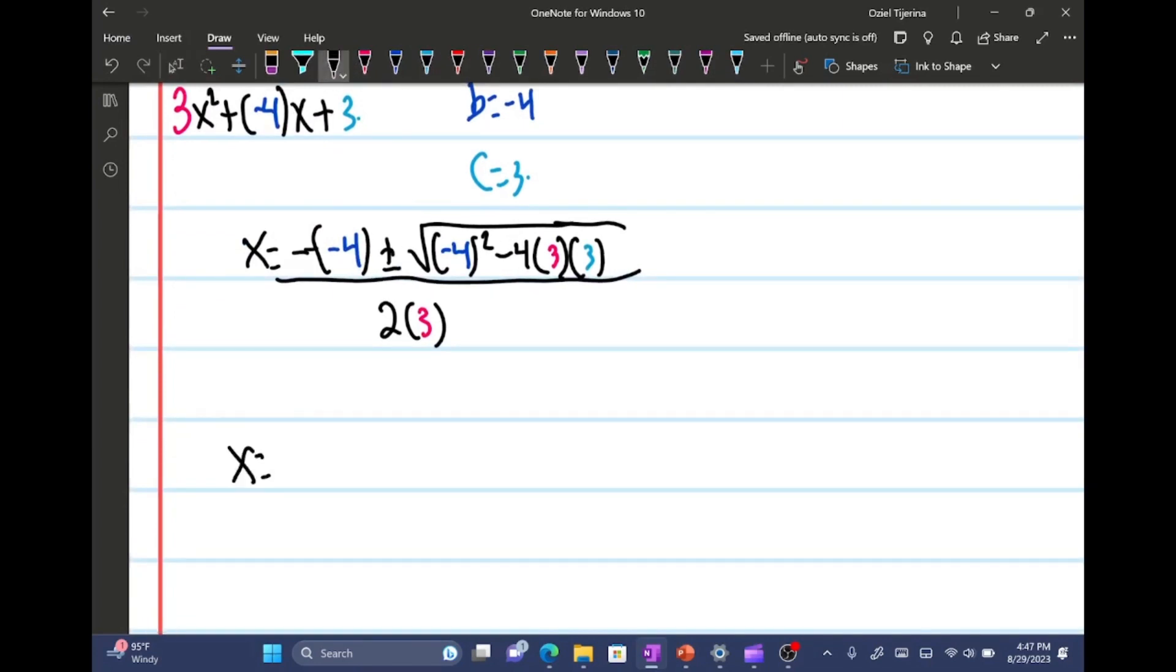So negative of negative 4 is just gonna be 4 plus or minus square root. Negative 4 quantity squared is 16 minus, and it's gonna be 12 times 3, and then all over 6.